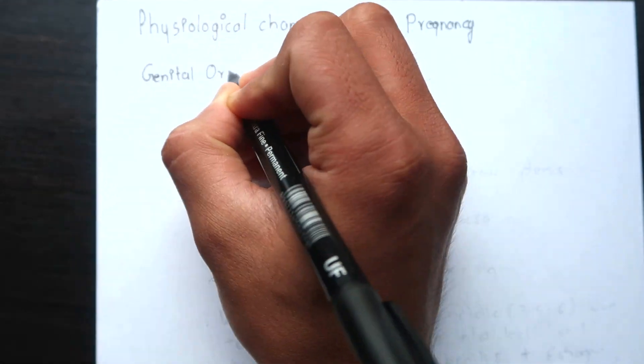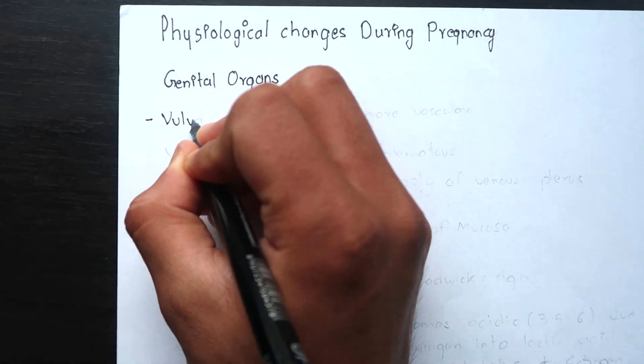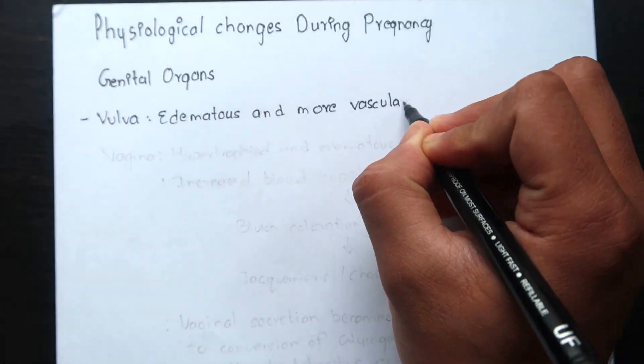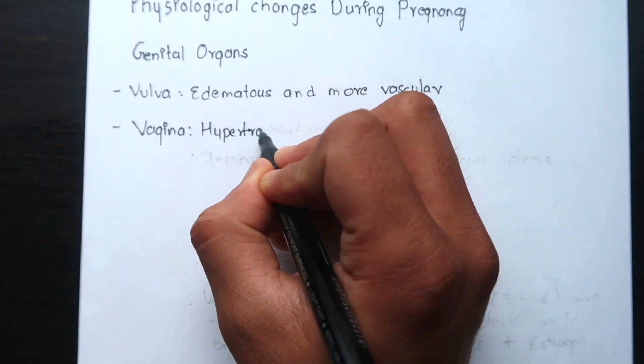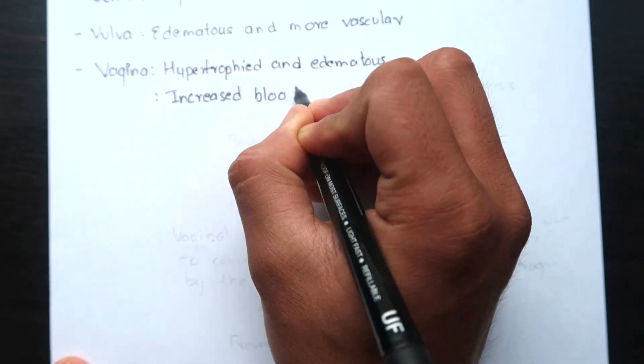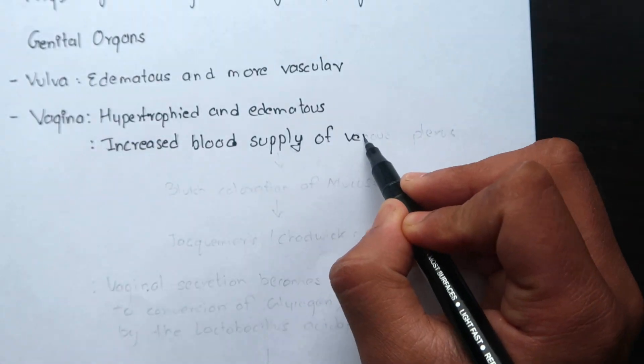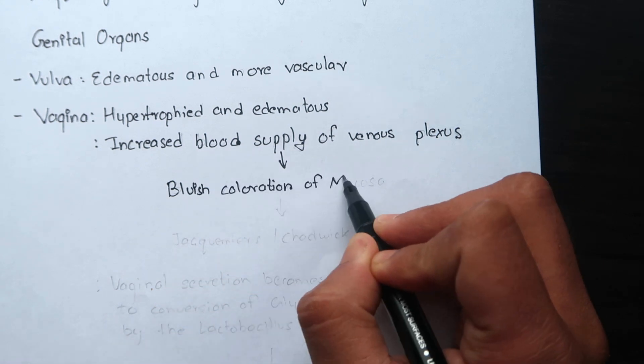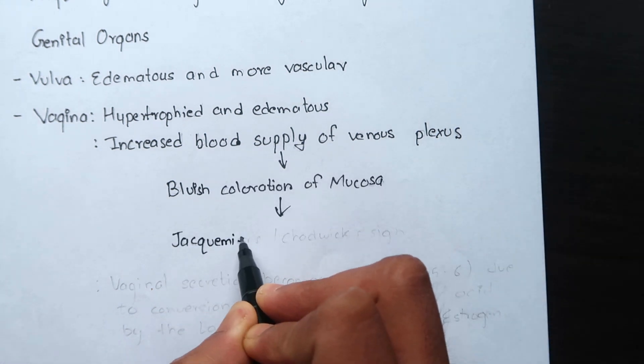First, changes in the genital organs. The vulva becomes edematous and more vascular. Vaginal walls become hypertrophied, edematous and more vascular. The increased blood supply of the venous plexus surrounding the walls gives the bluish coloration of the mucosa called Jacquemier's or Chadwick signs.